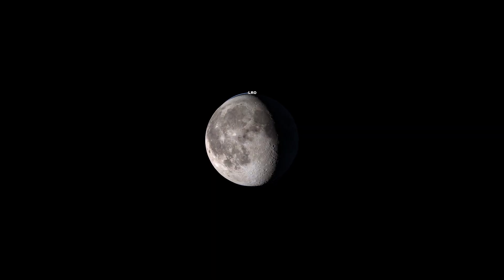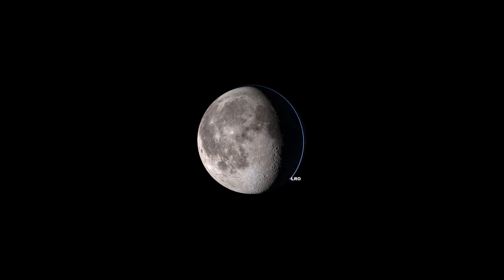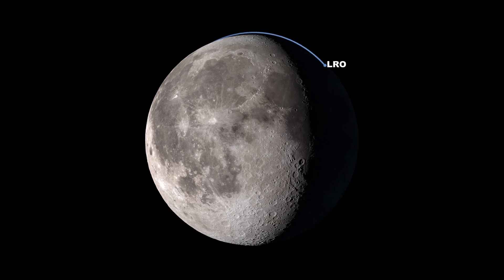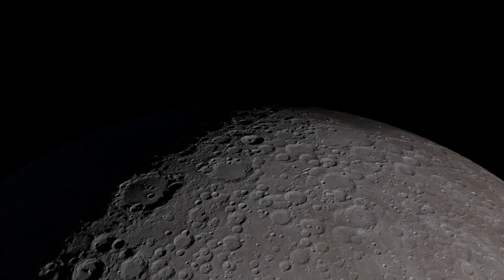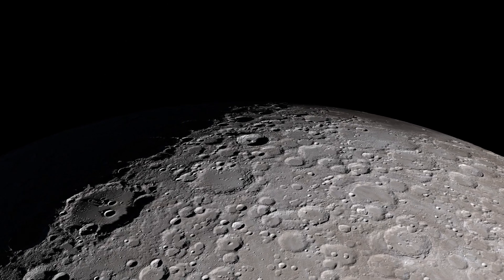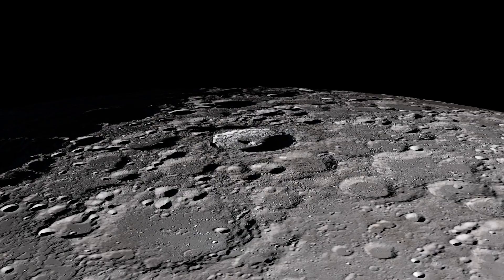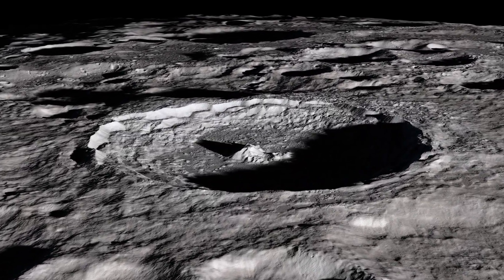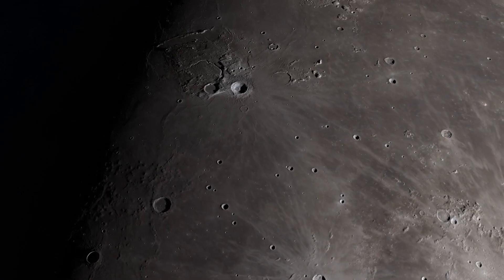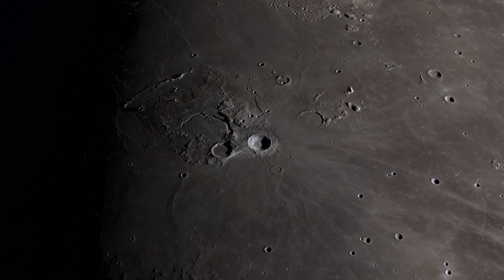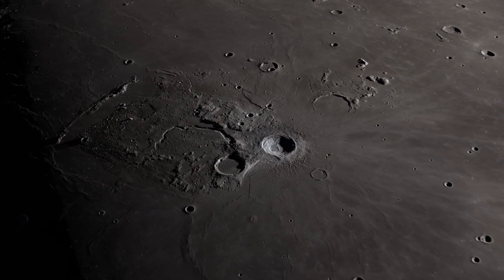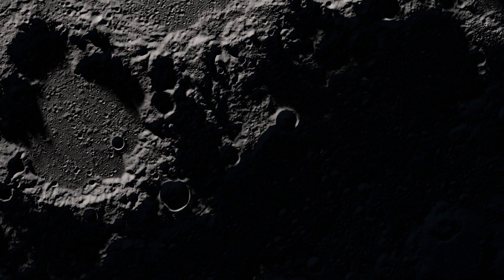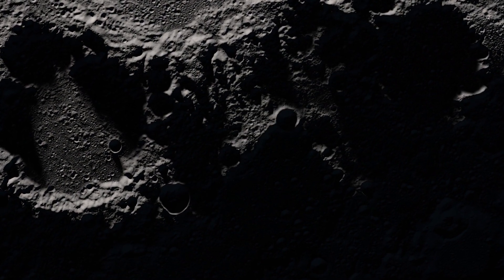Tour of Asteroid Bennu was inspired by an earlier video also made by NASA Scientific Visualization Studio called Tour of the Moon. The visualizer, Ernie Wright, used elevation data and high-resolution imagery from a NASA spacecraft called the Lunar Reconnaissance Orbiter. He was able to fly the camera very close to the lunar surface and show the actual textures, shadows, and highlights, just the way they would appear if you were hovering close to the surface of the moon.